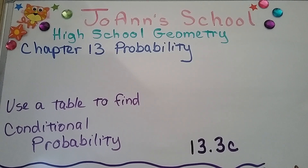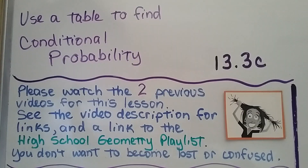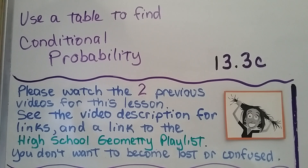We're in the third part of our lesson for 13.3 and we're going to use a table to find conditional probability. We have two previous videos for this lesson that are linked in the description along with the high school geometry playlist if you need it or become lost or confused.